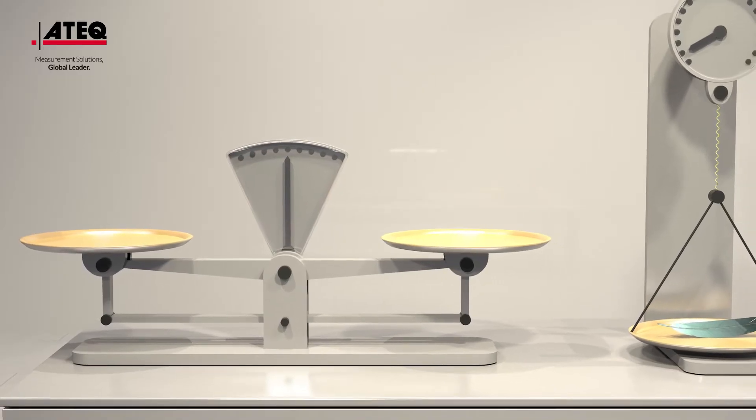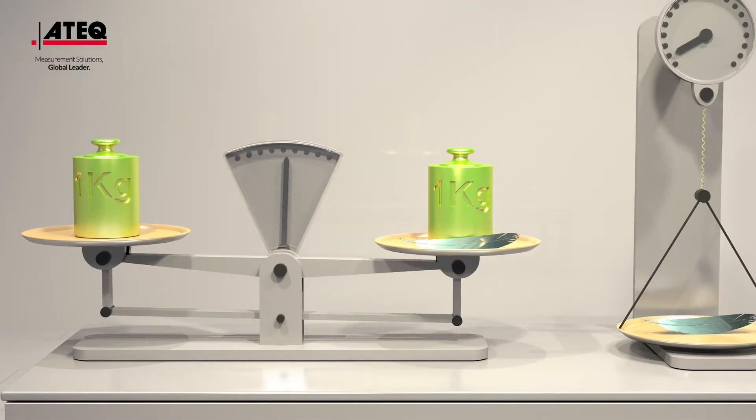You can even place one kilo on each side of the differential scale and it will always see the weight of the feather.